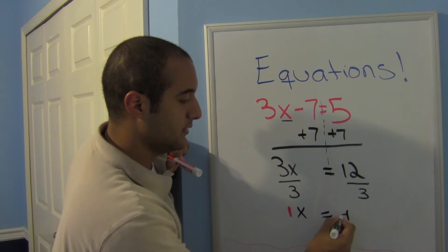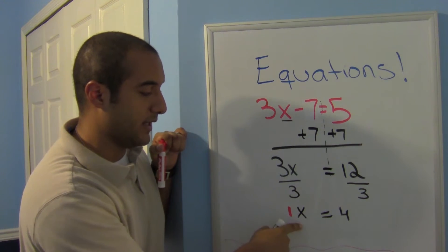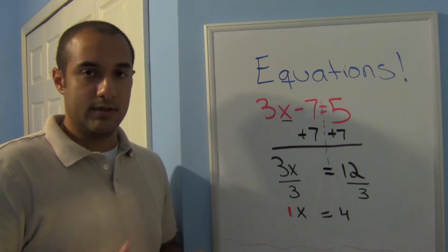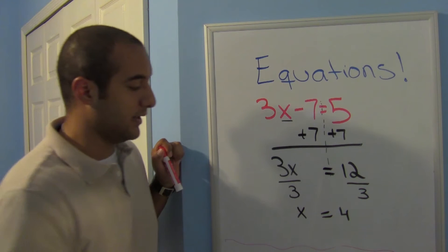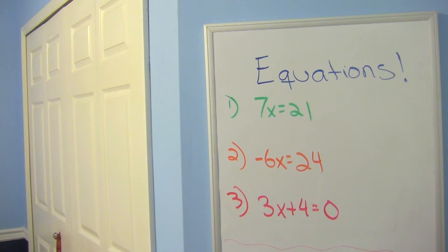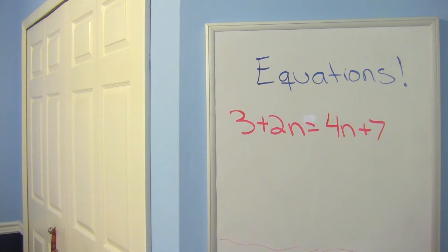3 divided by 3 is 1, so technically it's 1x, and 12 divided by 3 is 4. Anything times 1 stays the same, so x equals 4 is my final answer. Go ahead and pause the video and try some practice problems — the answers are coming up in 3, 2, 1. Here are your answers — I hope you got them right.